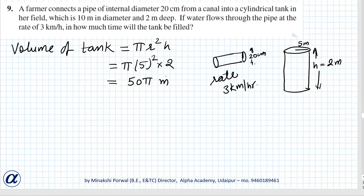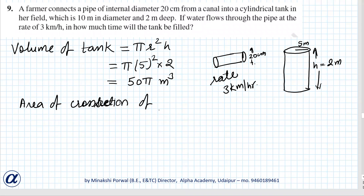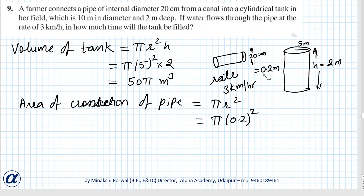Now, the area of cross-section of the pipe is equal to π r² because it is circular. The radius is given in centimeters — diameter is 20 centimeters, so radius is 10 centimeters — and when converted to meters it will be 0.1 meter. So the area of cross-section is π into 0.1 squared.